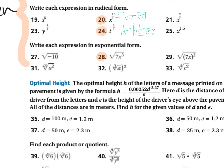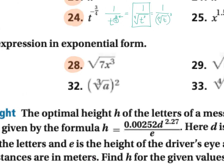Number 28 says write each expression in exponential form — so now we have the radical and we're turning it into an exponent. This one is a square root, and there are two pieces. We want to simplify both into exponential form. A square root is always a one half power. So this is going to be seven to the one half power. Then X — it's basically X to the third to the one half, and we multiply those to get X to the three halves power. Your simplest answer is seven to the one half times X to the three halves.